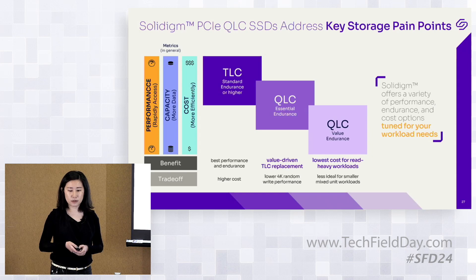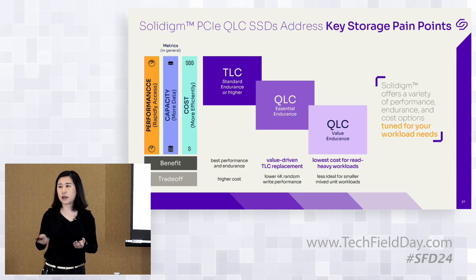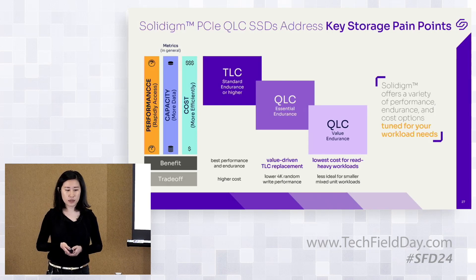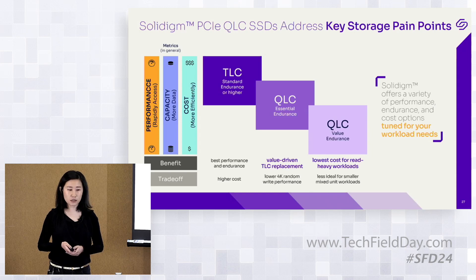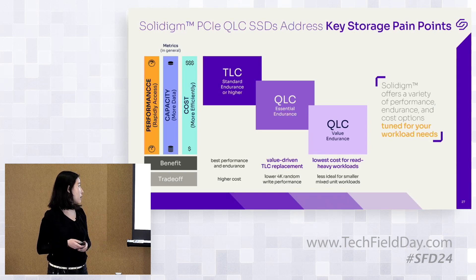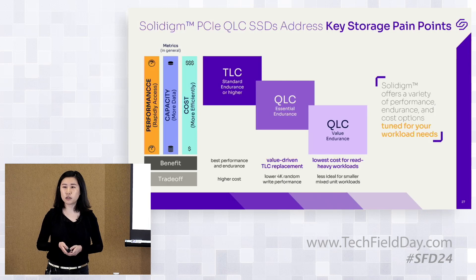As you can see here, Solidon has both TLC and QLC product offerings. The TLC family, we call it standard endurance or medium endurance, consists of the 1 DLPD and 3 DLPD products. And for QLC, to address the market of lower endurance, we have both Essential Endurance and Value Endurance.